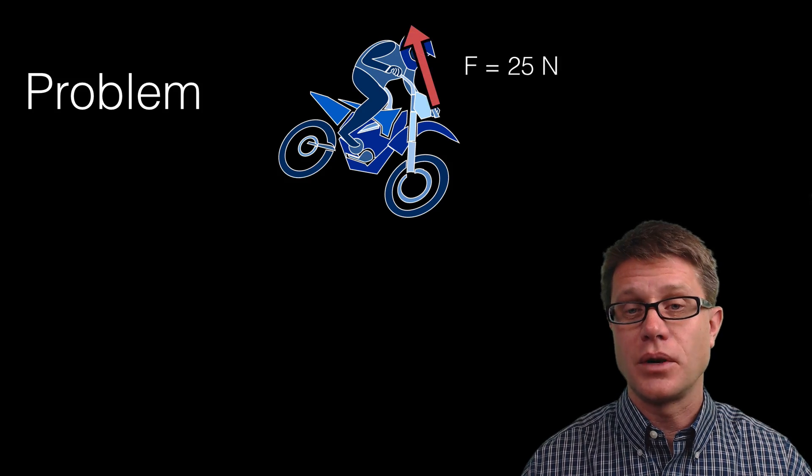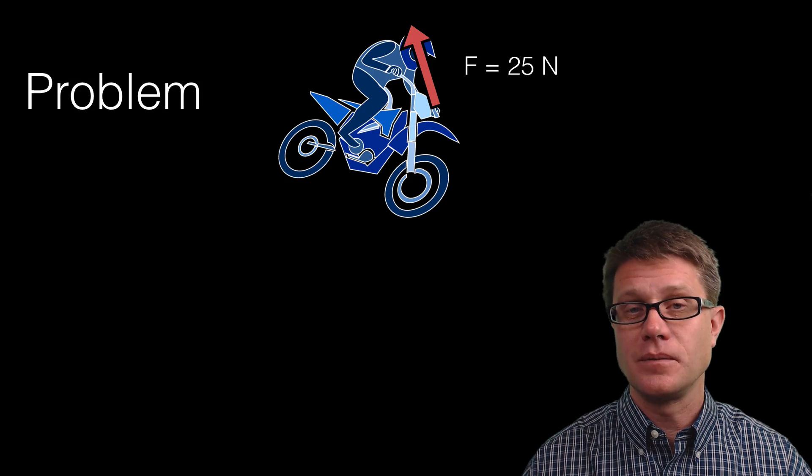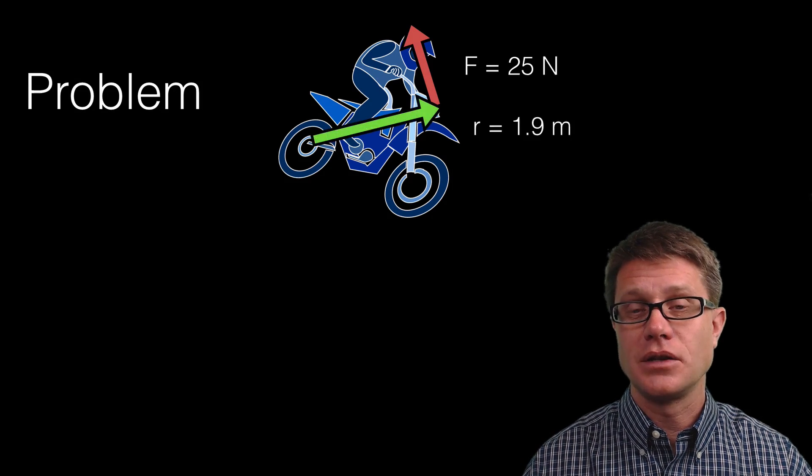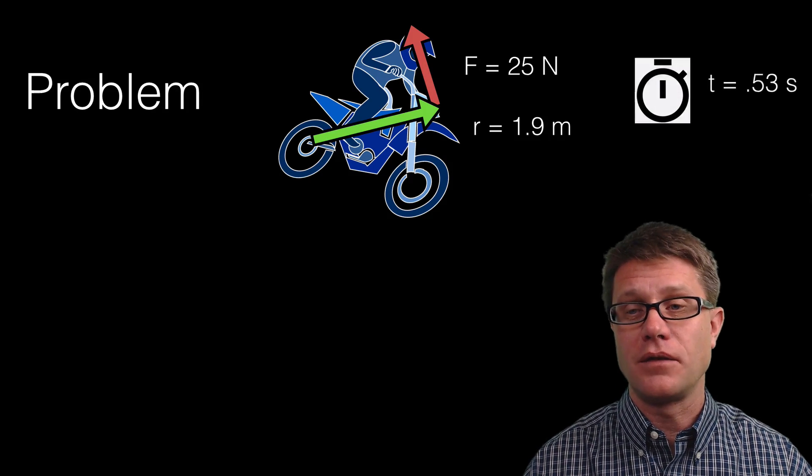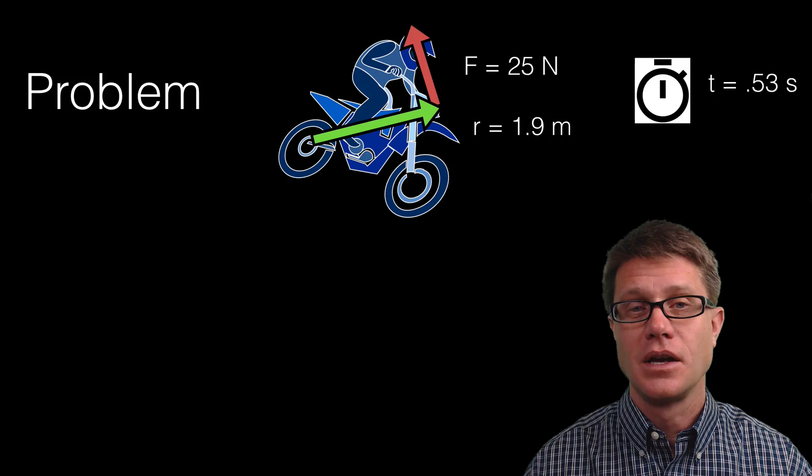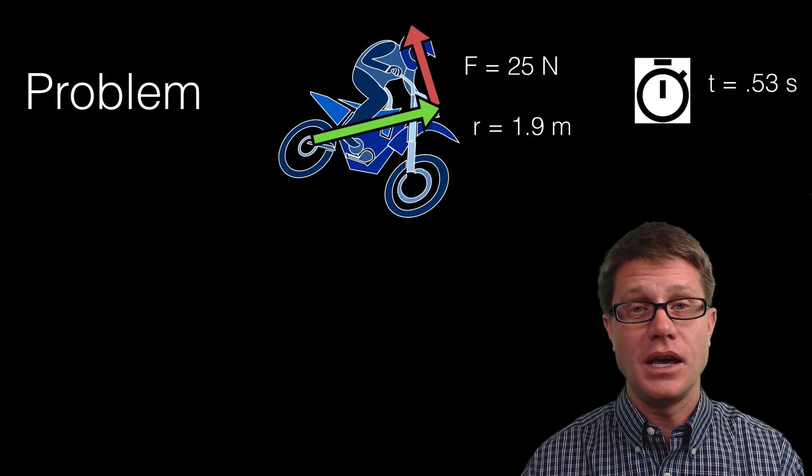So if we solve a problem where we know what the force is, let's say it is a 25 newton force in this direction, and we know the distance from that center of rotation, let's say it is 1.9 meters, and we know the amount of time that we are applying that force, let's say it is 0.53 seconds, we can solve the change in angular momentum.